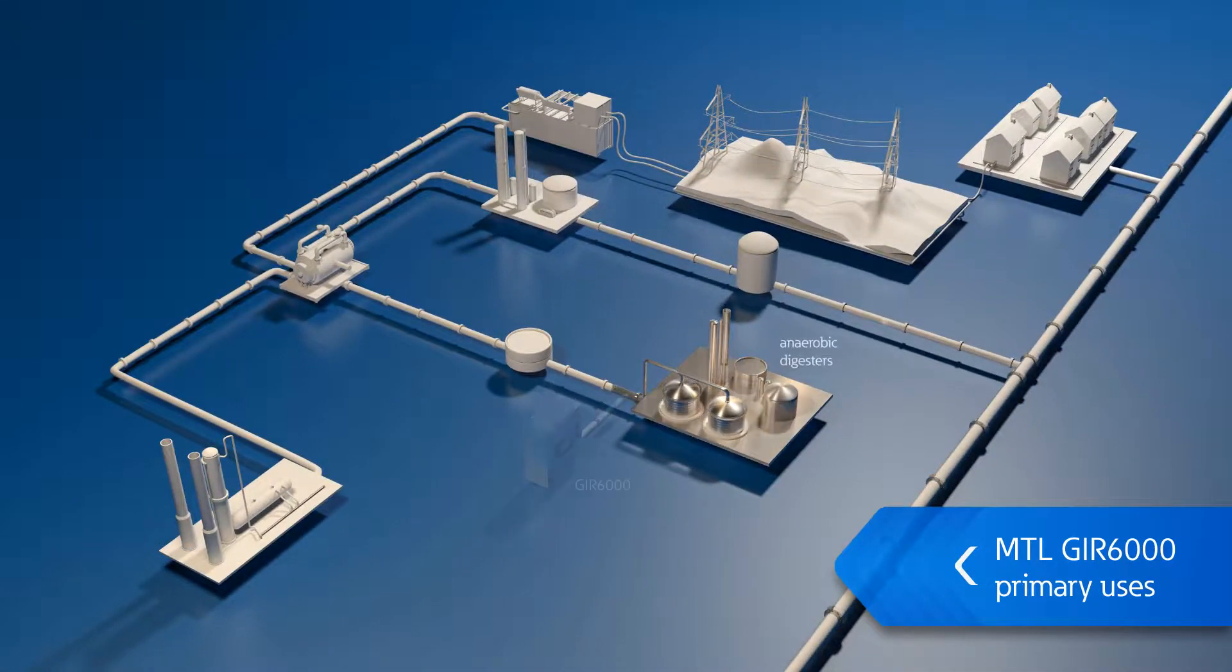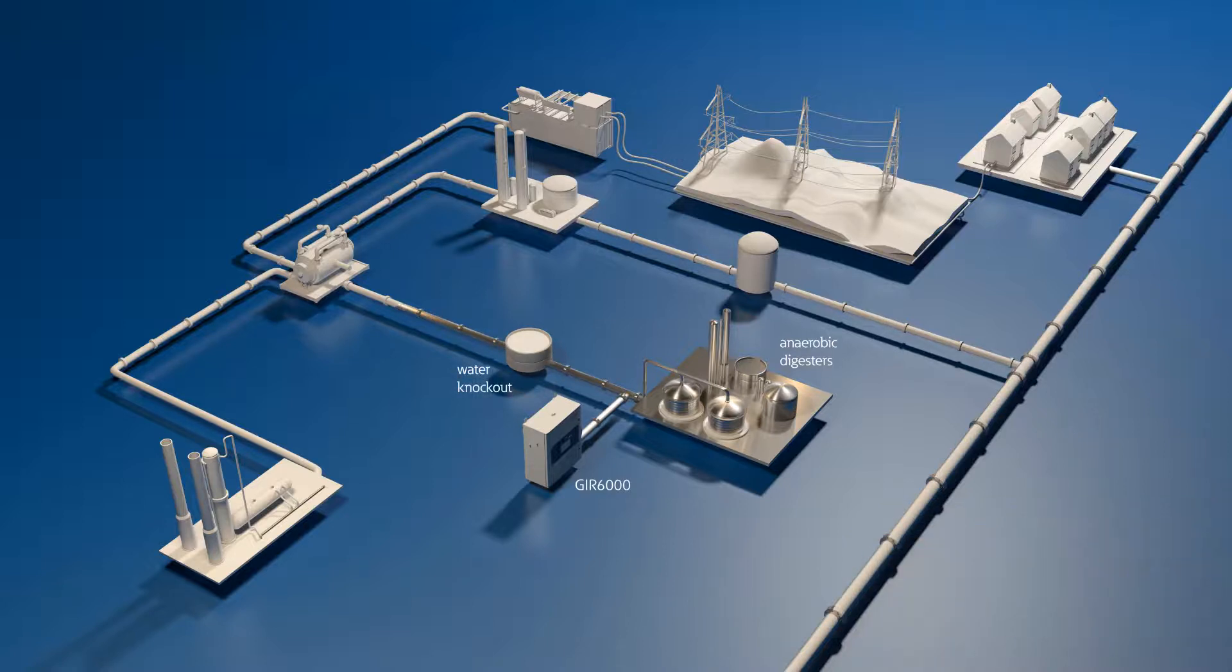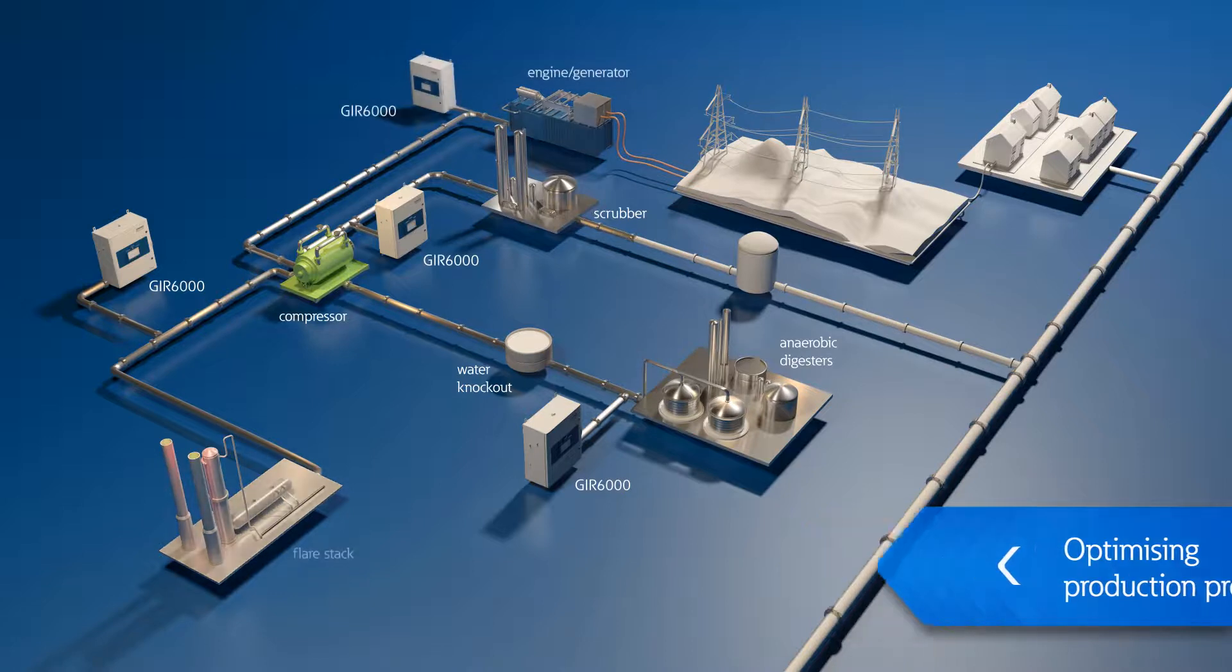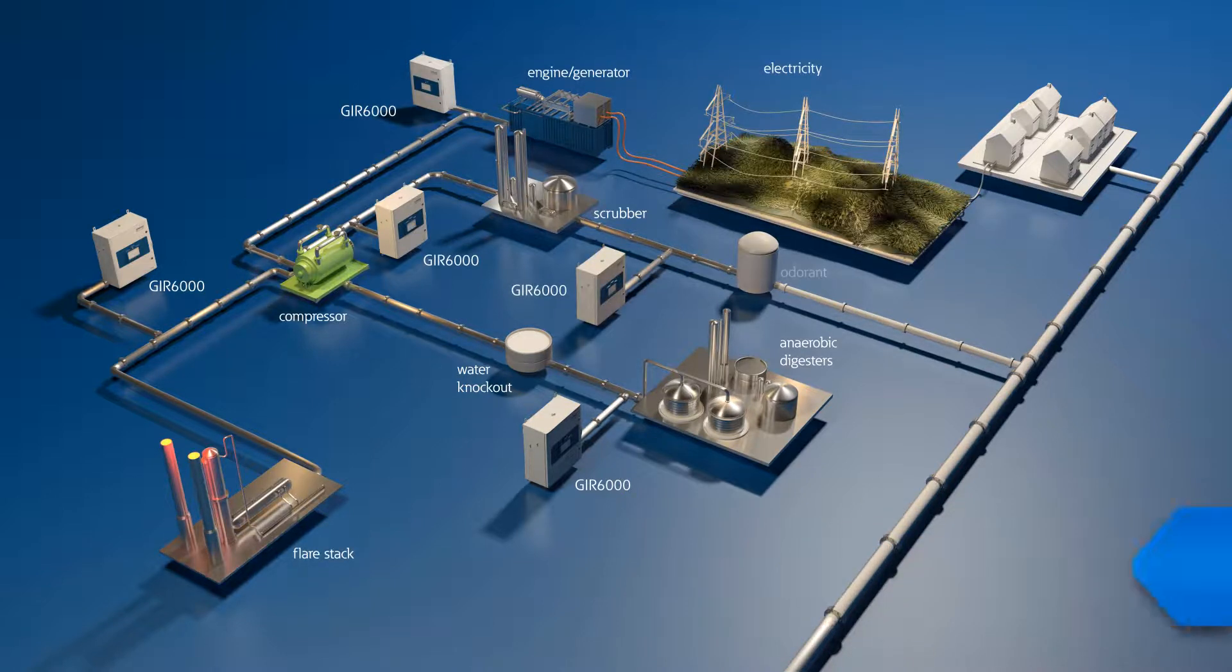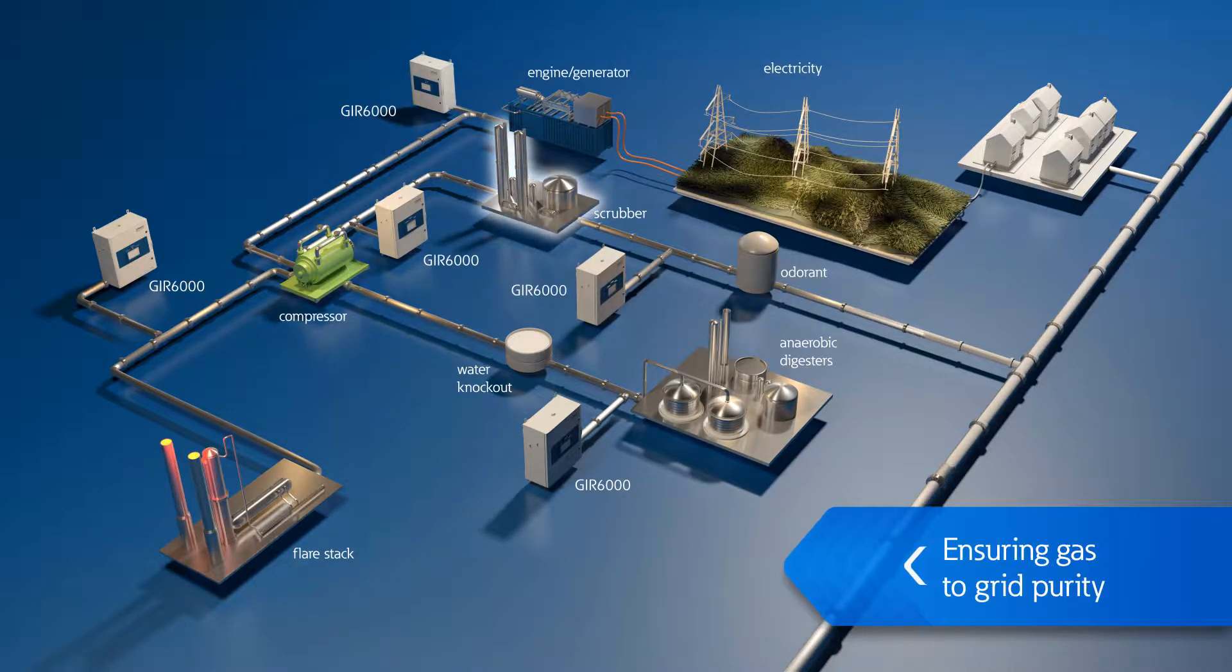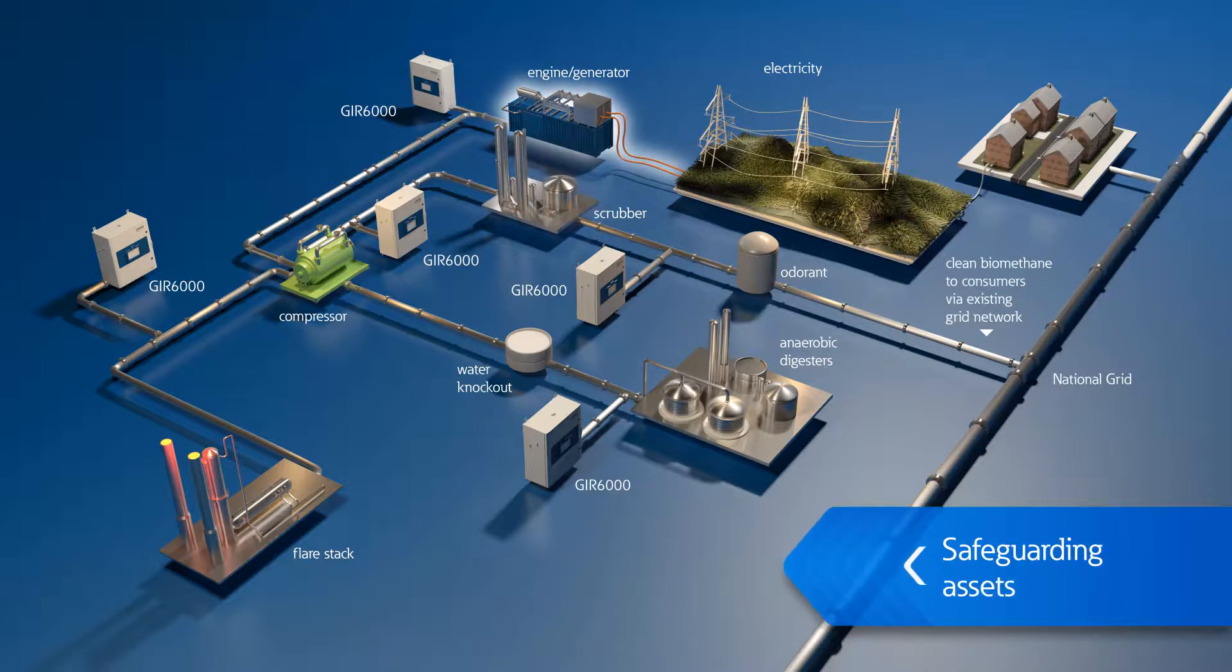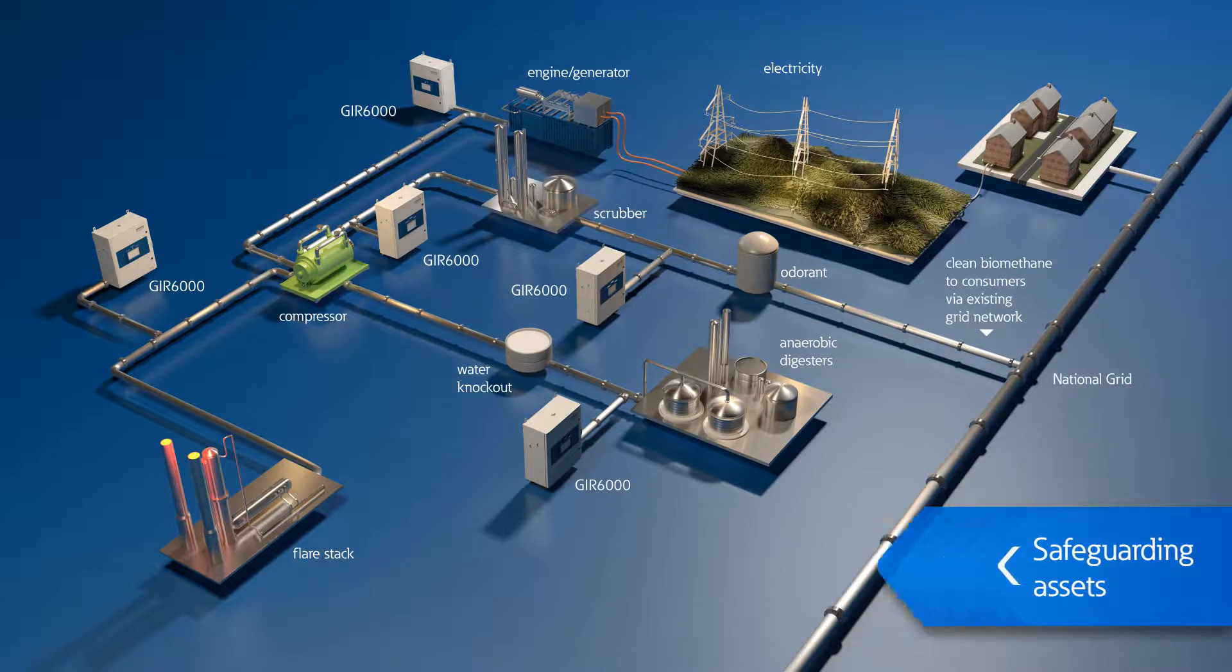The MTL GIR 6000 addresses the typical measurement needs of an efficient biogas plant, such as monitoring methane yield from the feedstock to optimize the production process, helping to comply with strict mandatory requirements on the purity of gas being fed into the national grid, and safeguarding the quality of gas for engine efficiency and protection.